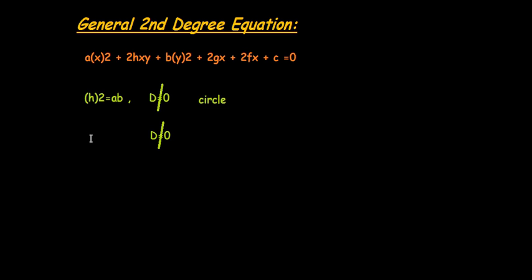Similarly, when the value of H squared is less than AB and delta is not equal to 0, this will represent an ellipse.